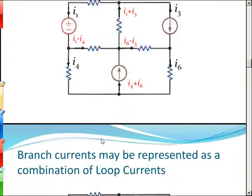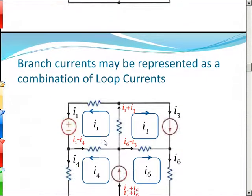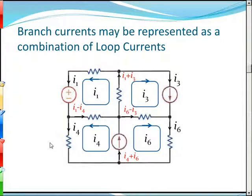The way we can represent this is that we can imagine — through a figment of our imagination — the currents in this circuit to be a superposition of a minimum number of loop currents. If we know the amount of current in those loops, we can find the current in any branch.